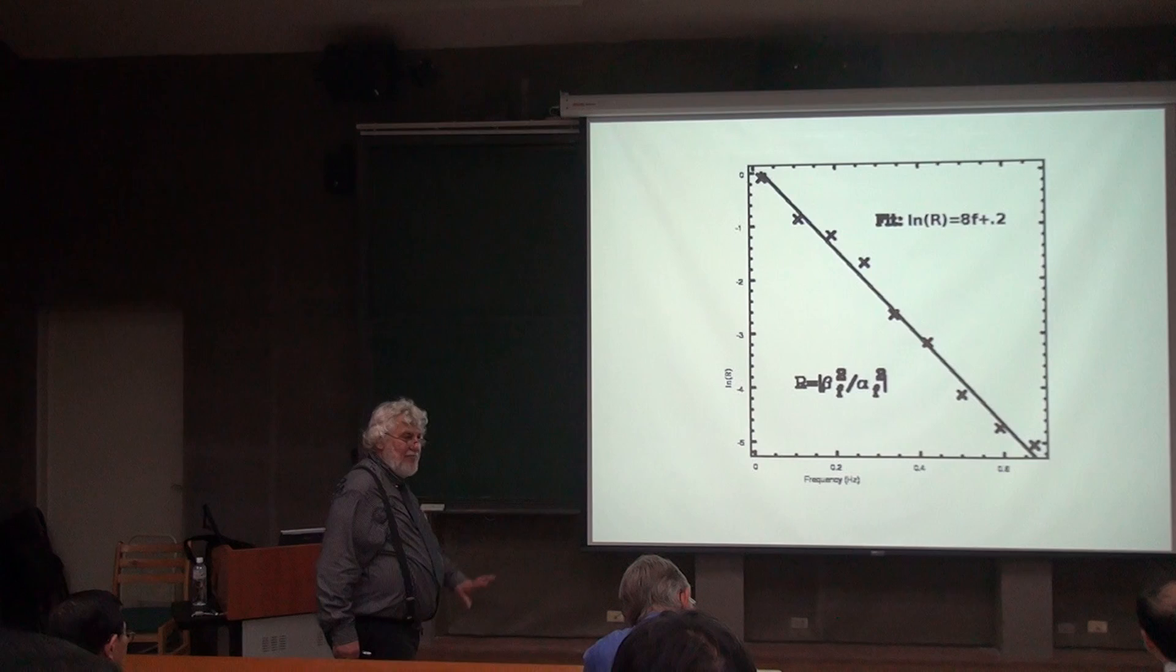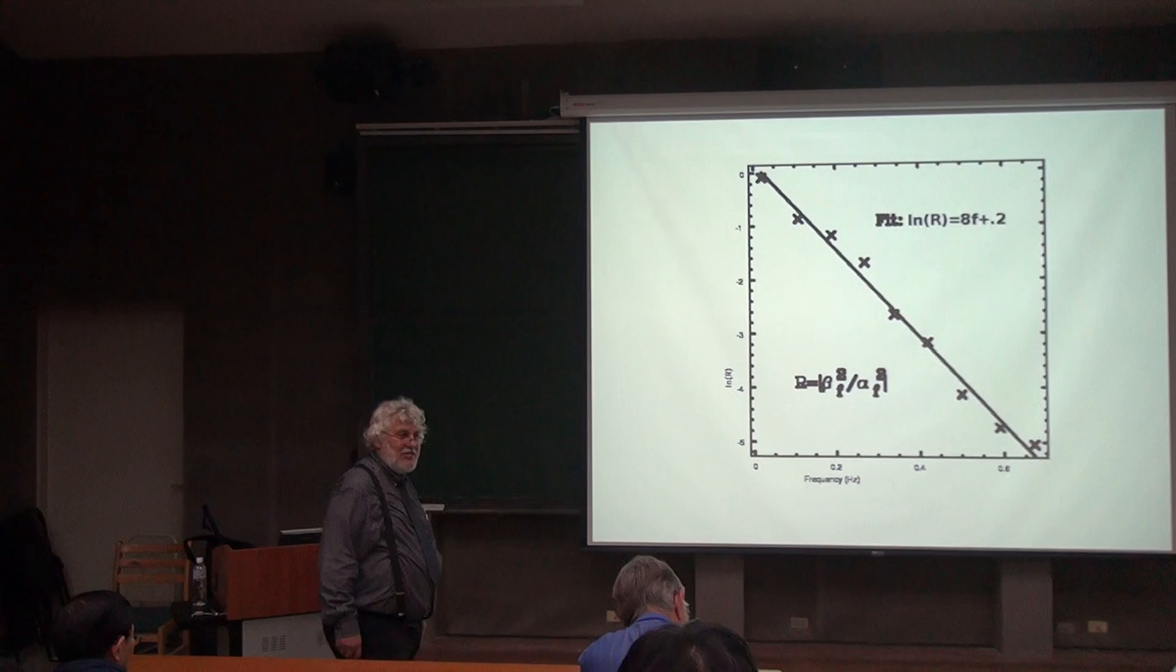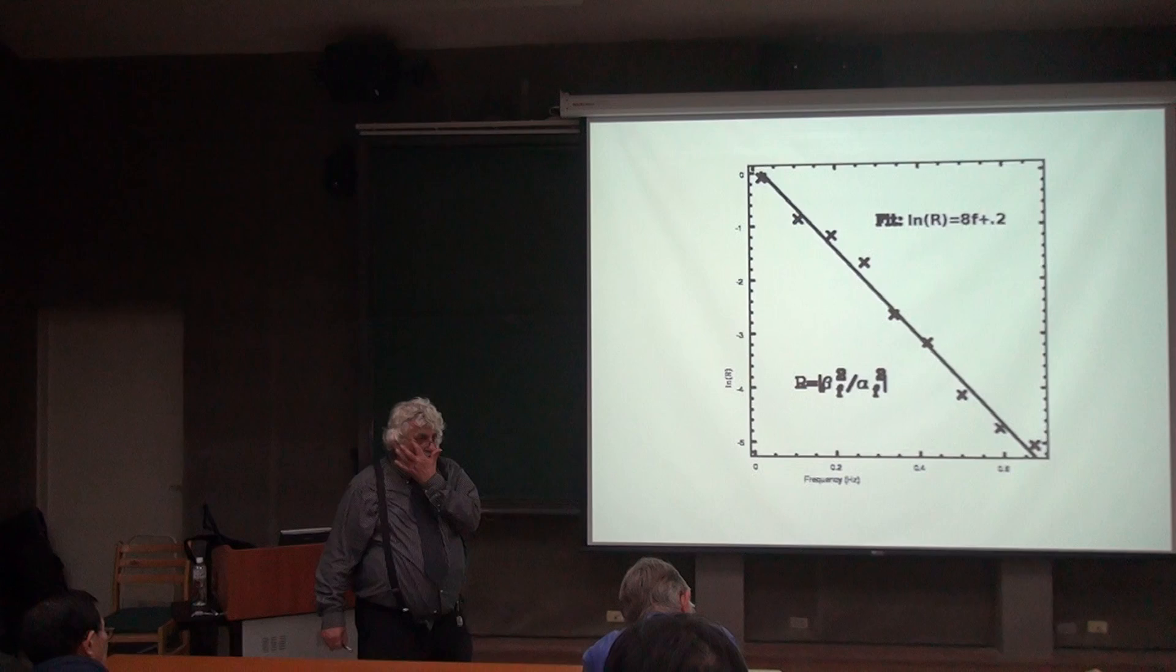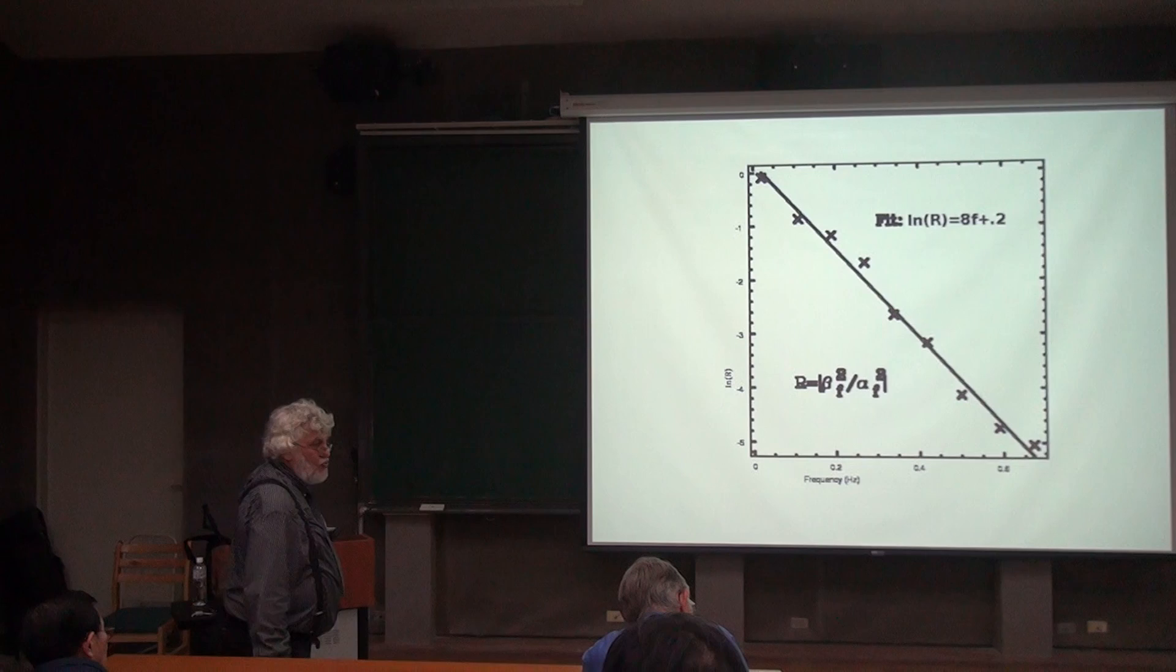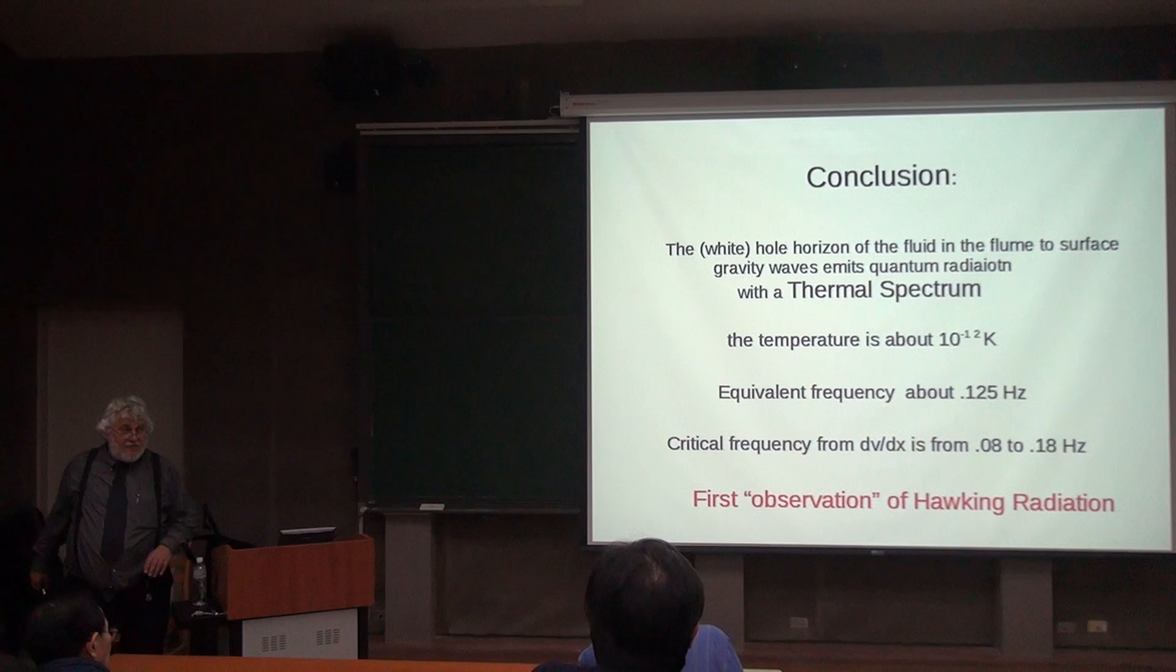But we've done the stimulated emission. And Einstein told us that when you know the stimulated emission, you know what the spontaneous emission is. And the spontaneous emission would simply be the Hawking radiation. And this tells us that the Hawking radiation would have a temperature of about 10 to the minus 12 Kelvin. And when you take the derivative of C squared minus V squared, one gets about 10 to the minus 12 Kelvin. They agree to within about 50%, which just absolutely and utterly astonished us. We never expected to get such good results.